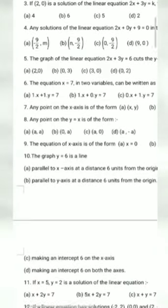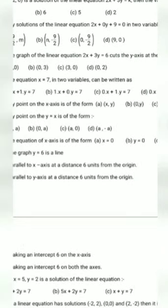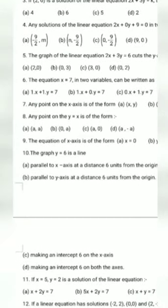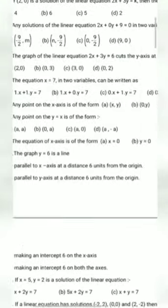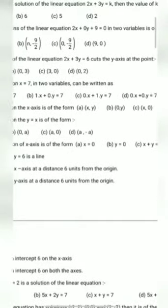The equation x equal to 7 in two variables can be written as x plus 0 into y equal to 7. That is option number B.